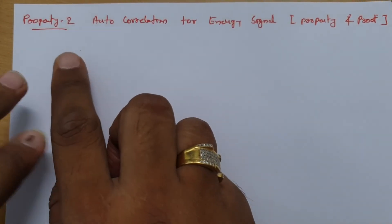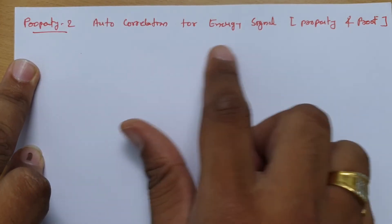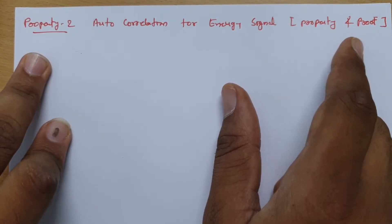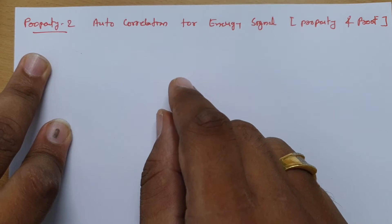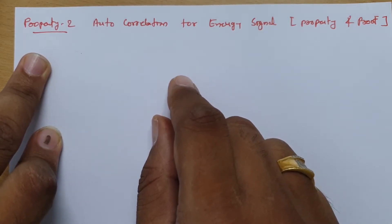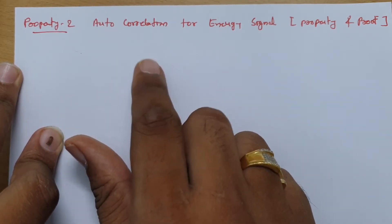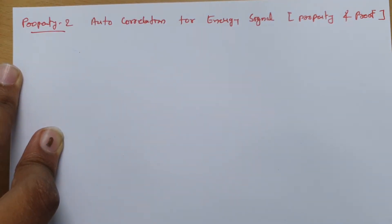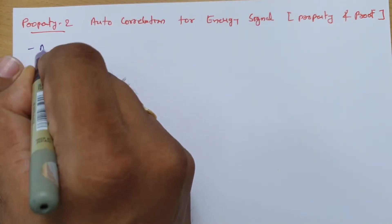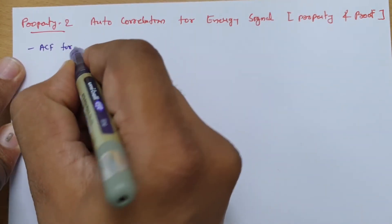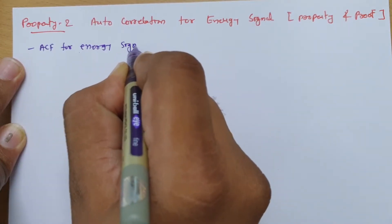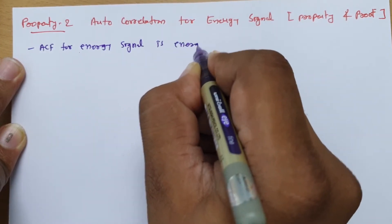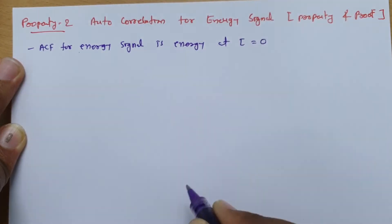Welcome to the signal and system lecture series. In this session, I will explain Property 2 of autocorrelation for energy signals. First I will explain the property and then we will have a proof of it. We have already discussed this in the properties of autocorrelation function for energy signals. The second property of autocorrelation function states that the autocorrelation function for an energy signal at tau equals 0 is equal to the energy E.